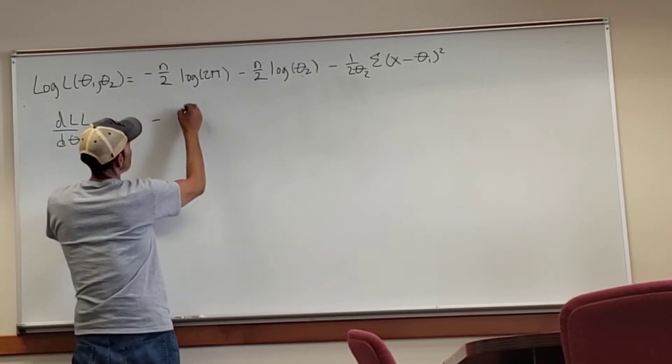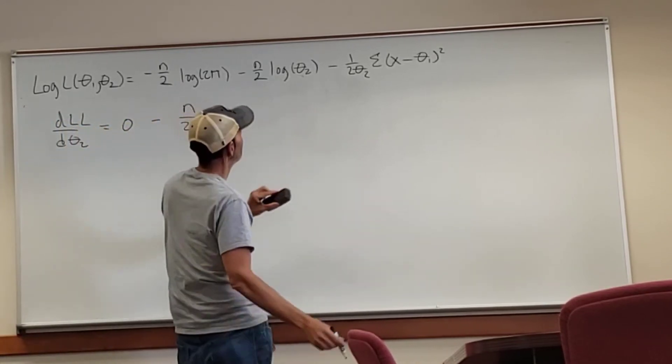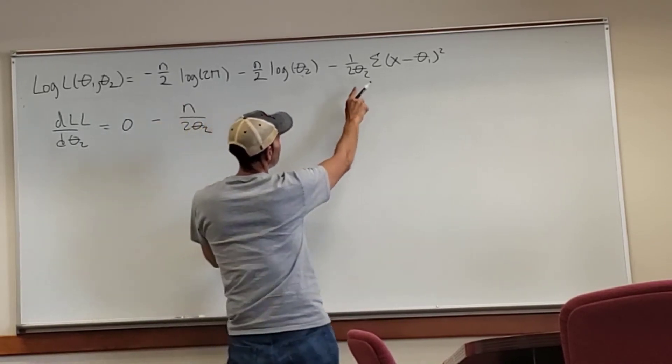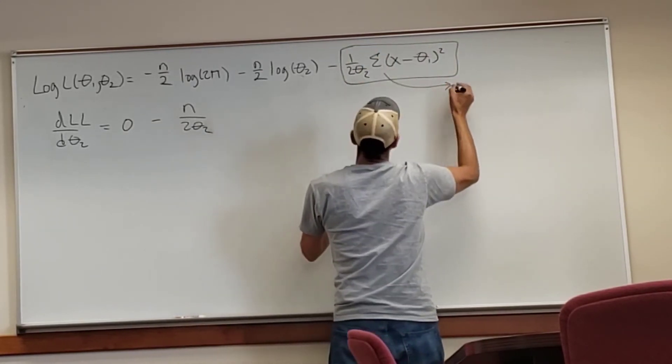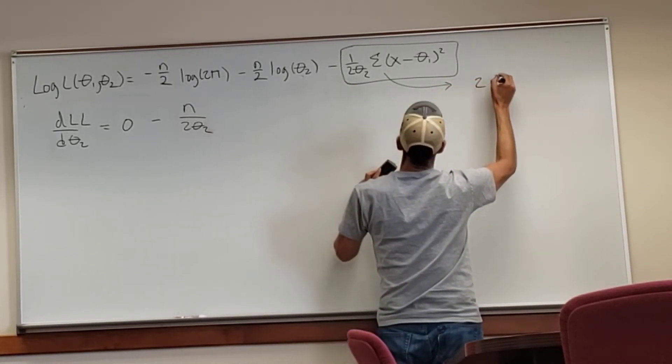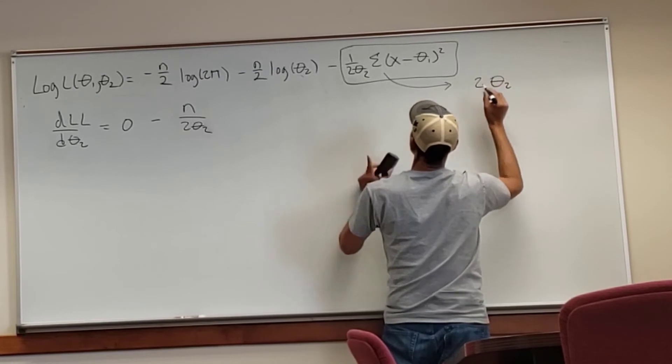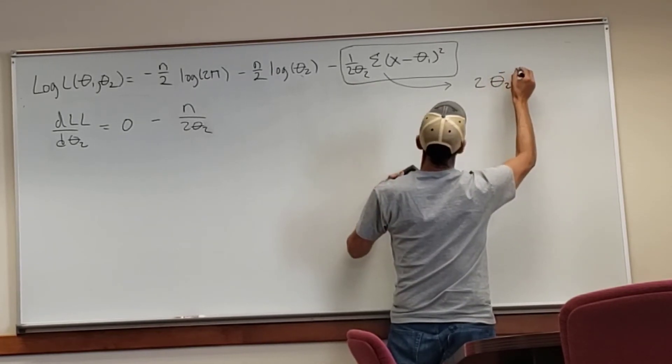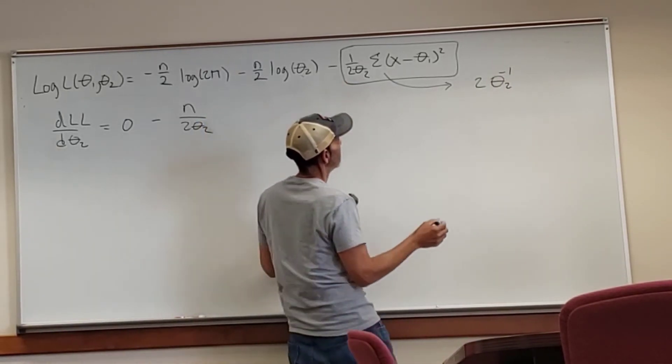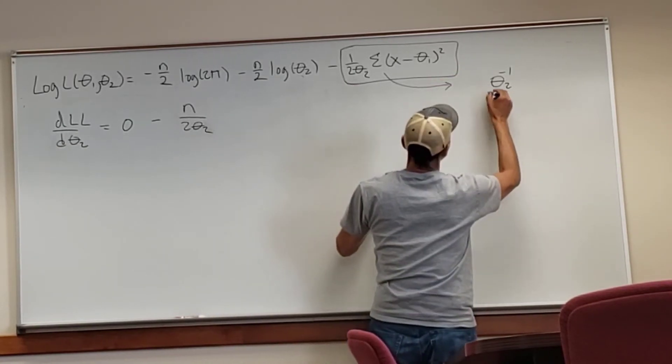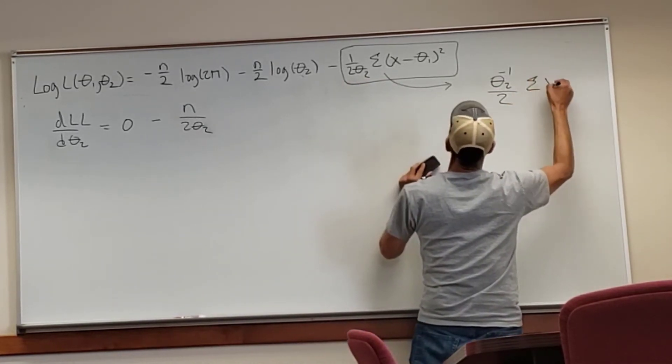So this is the derivative of a log function. The first term is zero. So the second term, n over two log theta two is going to be n over two times one over theta two, that's why we got this n over two theta two. The second term, though, I'm going to rearrange it a little bit to make it a little easier.